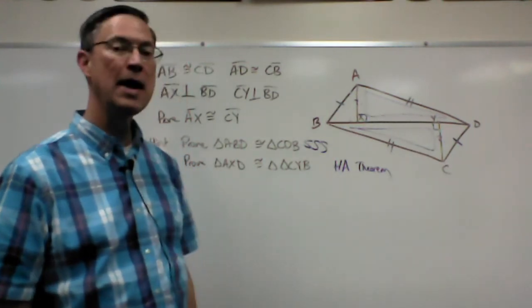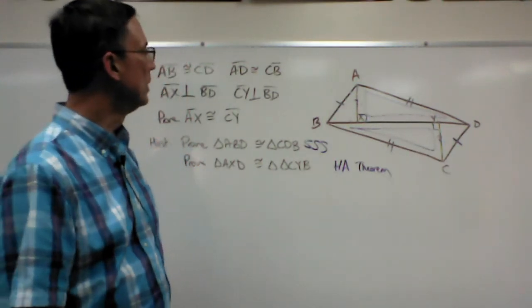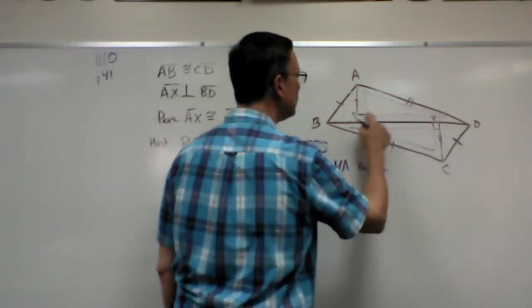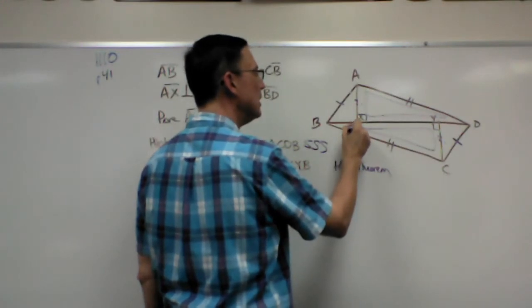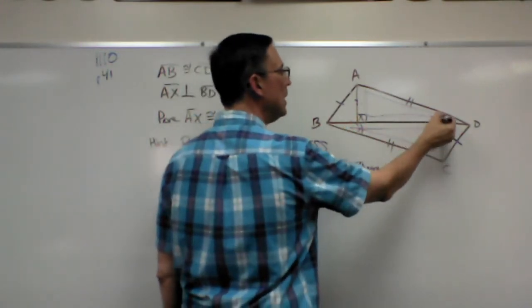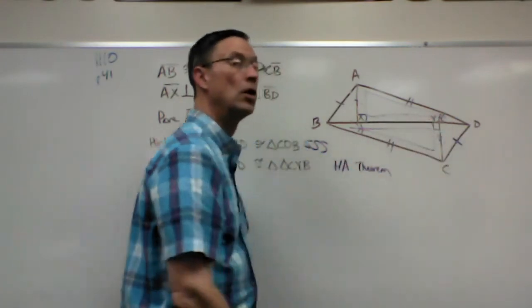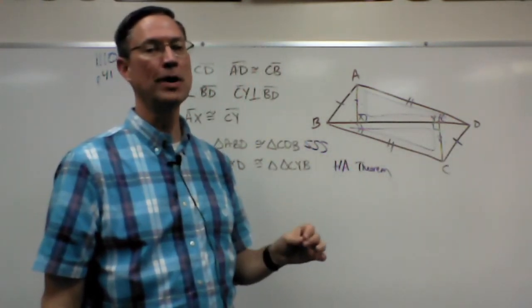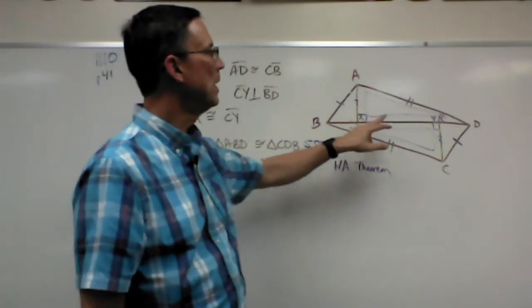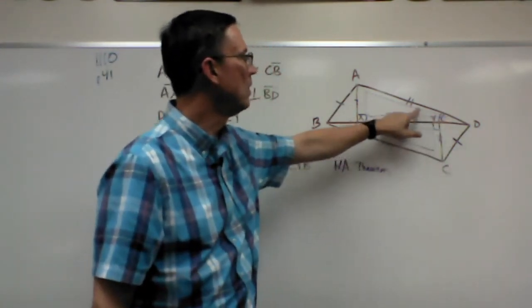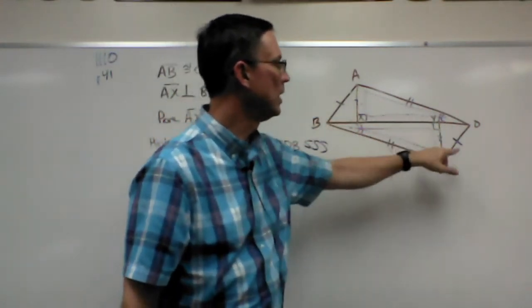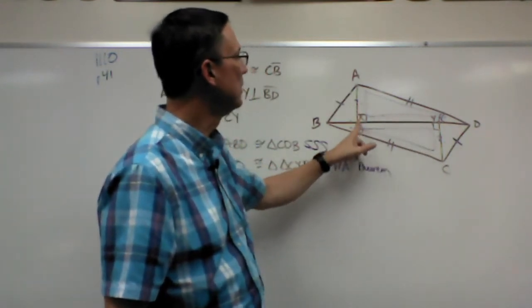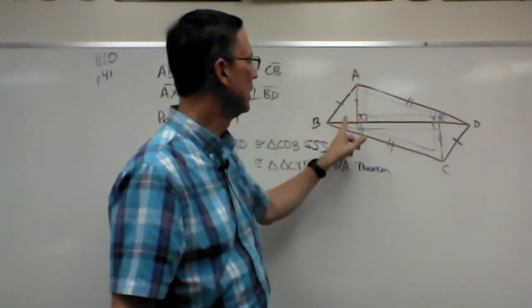So we need to find two angles that are congruent. Well, when we proved that these big angles here were congruent, do you notice that this angle and this angle here are corresponding parts of congruent triangles, right? And so these corresponding parts of these congruent triangles are congruent. And now those same angles are part of these smaller triangles.